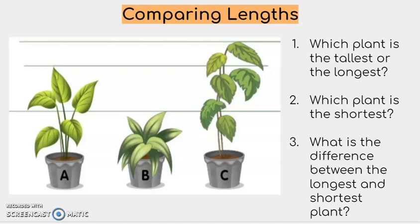You're right, plant C is the longest. Now, which plant is the shortest? A, B, or C? You're right, B is the shortest.